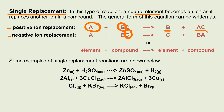This is the positive ion replacement. Let's take a look at this example: zinc is the solid, and this compound is sulfuric acid. When you put zinc as a solid in sulfuric acid, it yields two products. The first product is zinc sulfate, and we simply replace the hydrogen with the zinc, producing hydrogen gas.